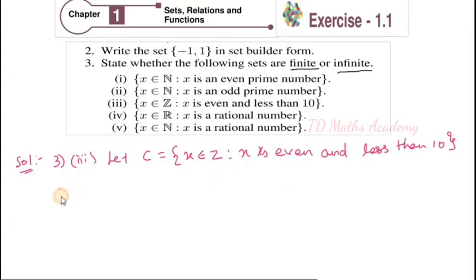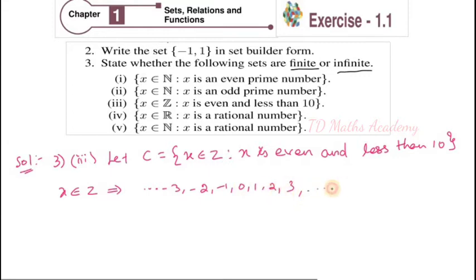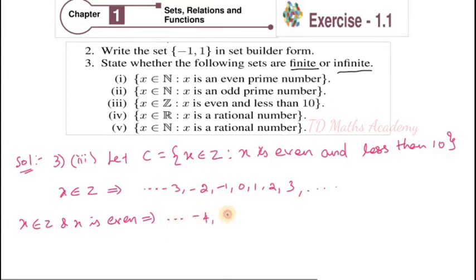What is x element of Z? Z means integers. So it may be dot dot dot, -3, -2, -1, 0, 1, 2, 3, dot dot dot — these are all integers. Next, x is even. So x element of Z and x is even. The even numbers from here are: dot dot dot, -4, -2, 0 — please understand, 0 is also an even number — 2, 4, dot dot dot.